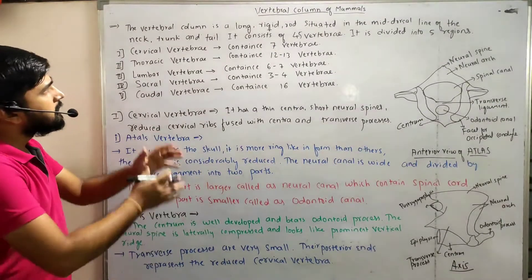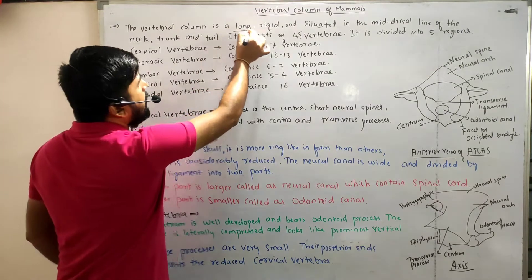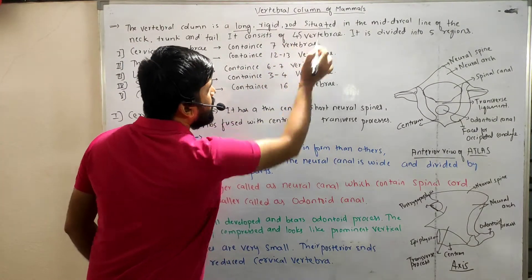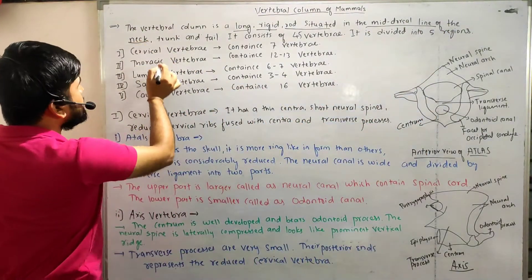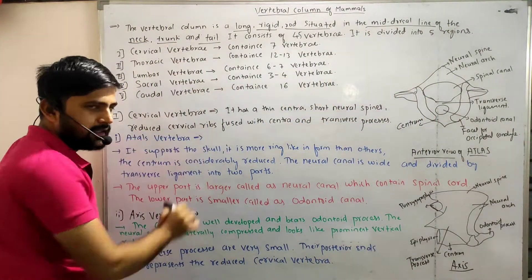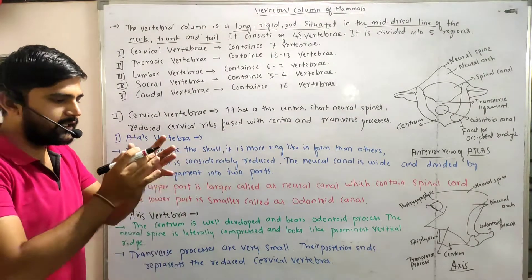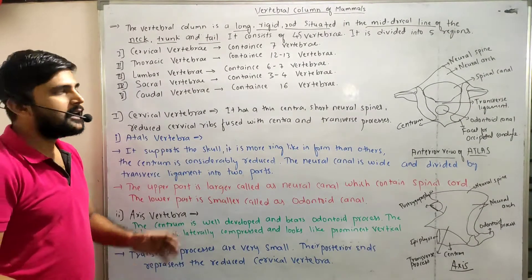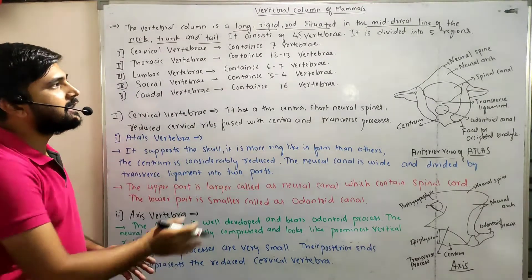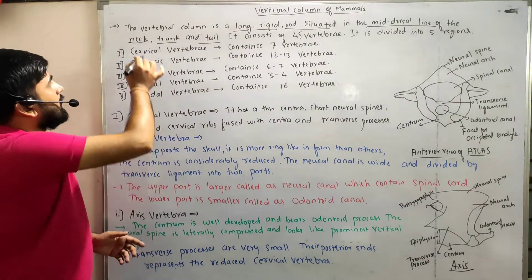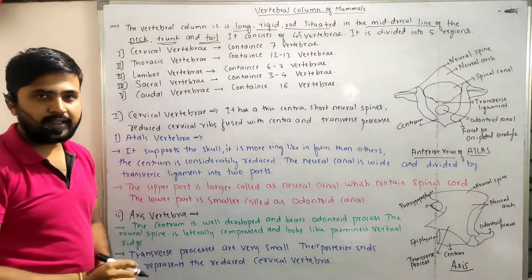In this video lecture, the vertebral column of the mammal is long, rigid, and rod-like, situated in the mid-dorsal line of the neck region, trunk region, as well as tail region.